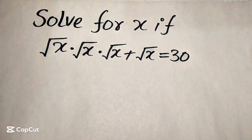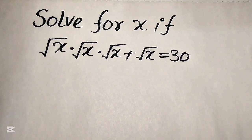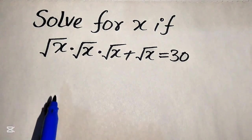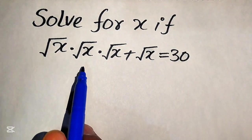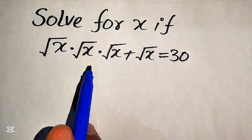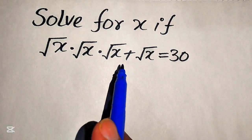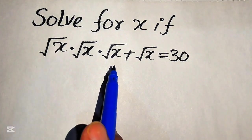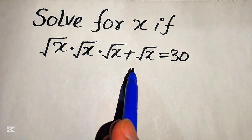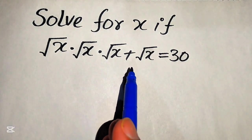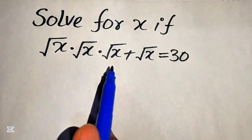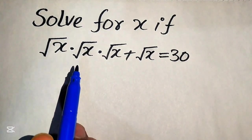Hello everyone. Today I want to show you how to solve this problem for the values of x: square root of x multiplied by square root of x multiplied by square root of x, plus square root of x, equals 30.